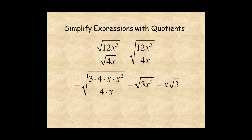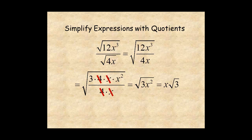Here's an example. First, bring the quotient under the radical. Then factor the numerator and denominator. Cancel common factors of 4 and common factors of x. The result is radical 3x squared, which simplifies to x radical 3.